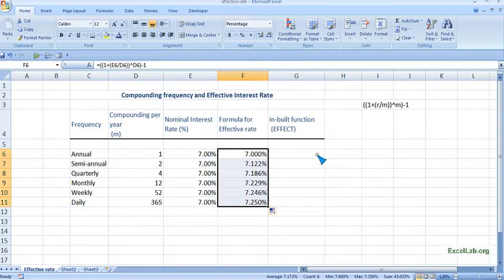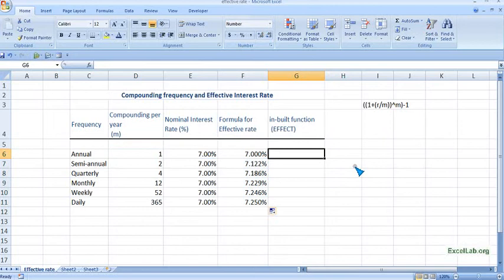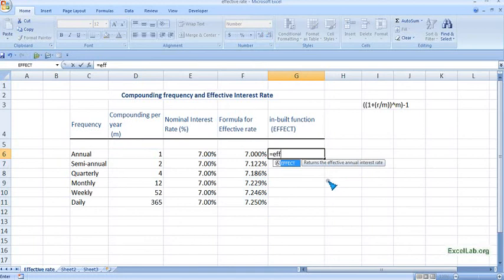Now there is an inbuilt formula in Excel. We will compare. Put equal to sign and write EFFECT. You can see the function EFFECT, and it says 'returns the effective annual interest rate.' Click on this and you can see the syntax.